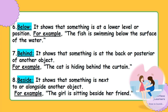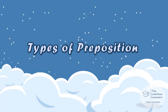'Below' — it shows that something is at a lower level or position. For example: the fish is swimming below the surface of the water. 'Behind' — it shows that something is at the back or posterior of another object. For example: the cat is hiding behind the curtain. 'Beside' — it shows that something is next to or alongside another object. For example: the girl is sitting beside a friend.